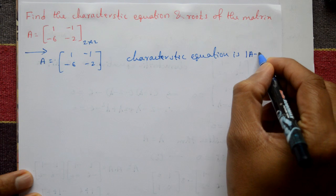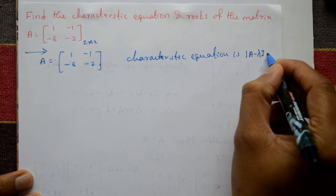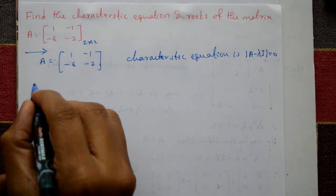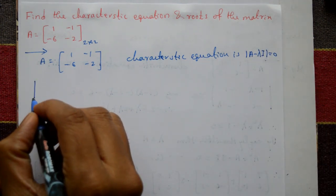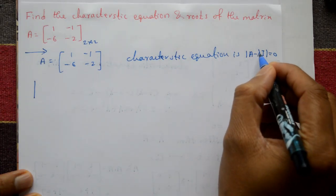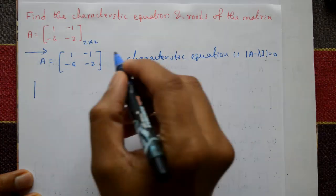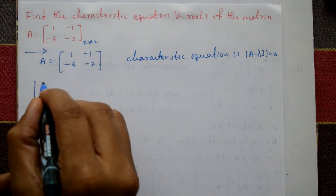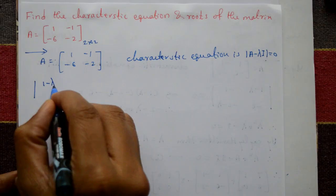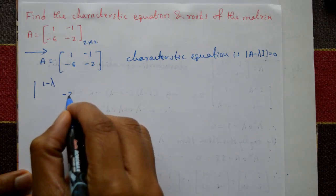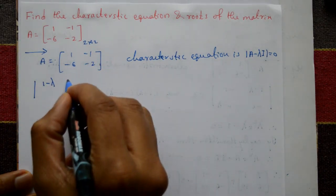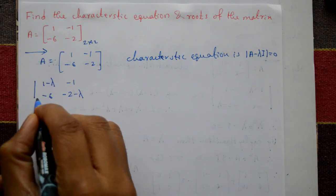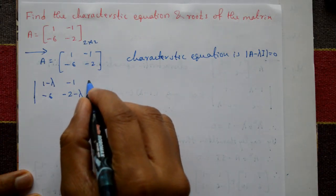The characteristic equation is the determinant of (A - λI) equal to 0. Taking the determinant: matrix A minus λI, we take the diagonal elements as (1 - λ) and (-2 - λ), while the remaining elements stay the same: -1 and -6.